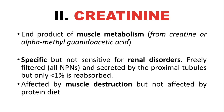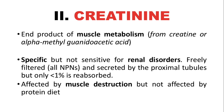Creatinine is the end product of muscle catabolism, derived from creatine (alpha-methyl guanidoacetic acid) — it is the anhydride of creatine. This test is specific but not sensitive for renal disorders, which is why it must be coupled with the urea test. Creatinine is freely filtered and secreted by the proximal tubules, but less than 1% is reabsorbed, so very little creatinine is found in blood. Unlike urea, creatinine is not affected by protein diet, but is affected by muscle destruction.